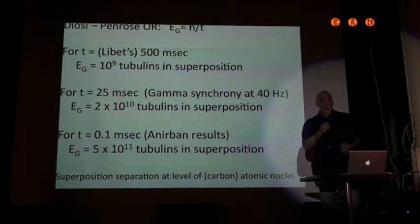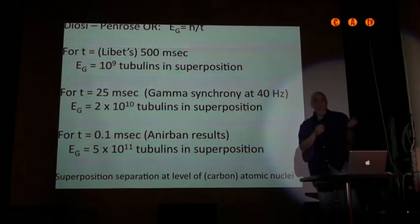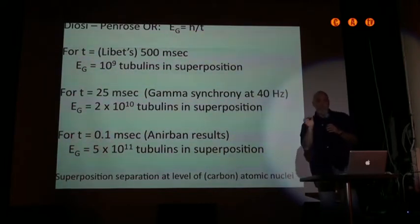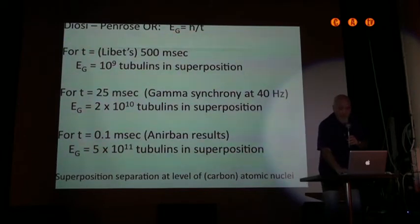Now, he's expanded the OR to include Diossi, who had a similar idea. There's some slight variations, but we do some calculations for different physiological events to show the number of tubulins inside a neuron. There's about 10 to the 8th tubulins per neuron. So we're talking roughly 20,000 to 100,000 neurons per conscious moment. And the superposition separation at many physicists agree only occurs at the level of carbon atomic nuclei.